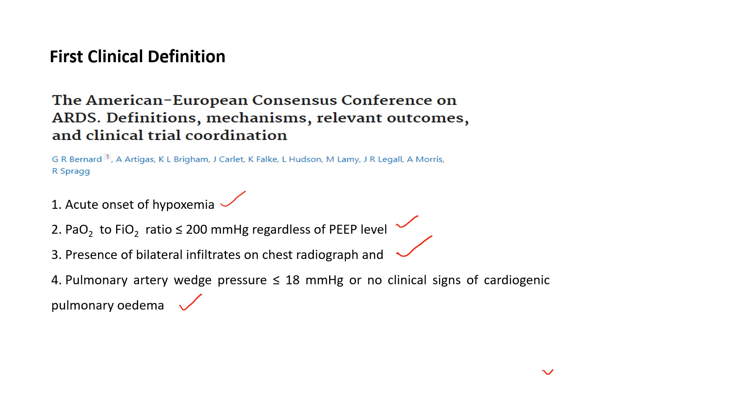The AECC definition also defined acute lung injury when the PF ratio was between 201 and 300.